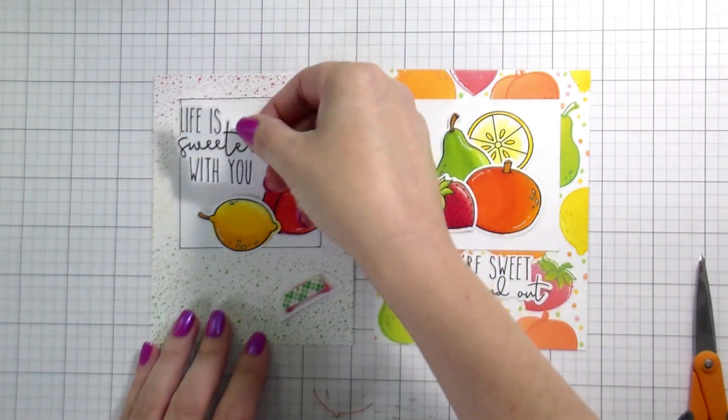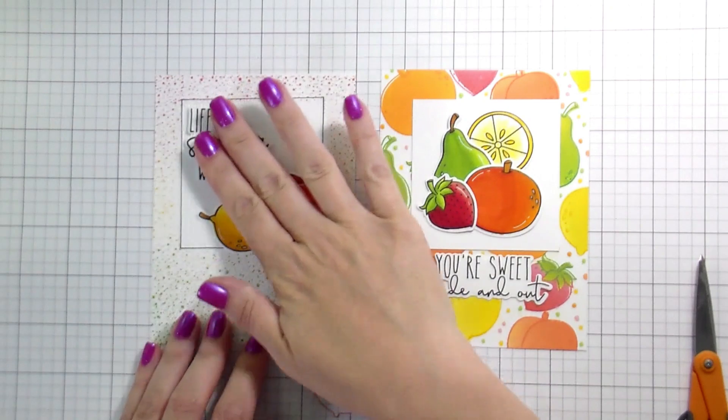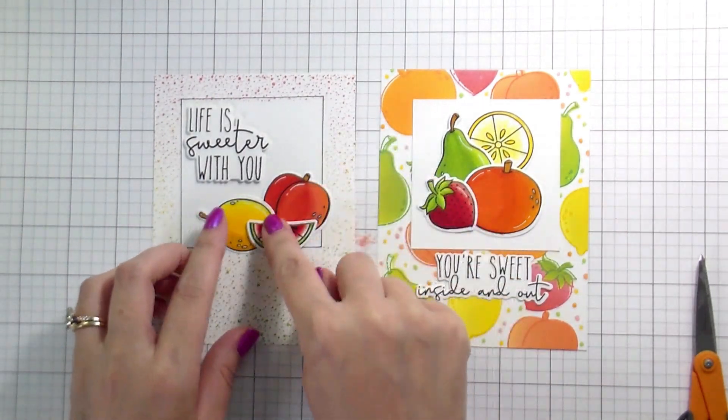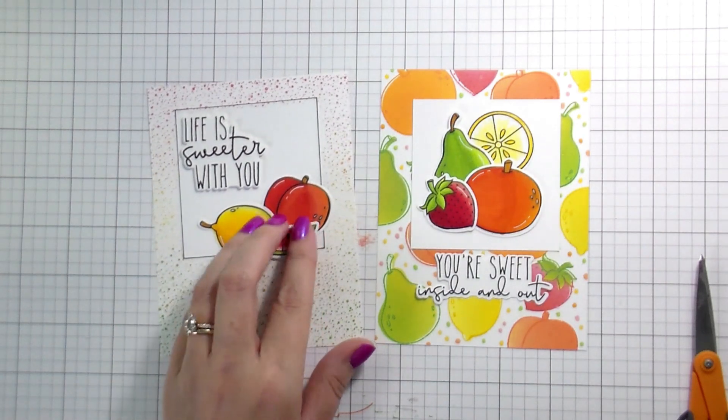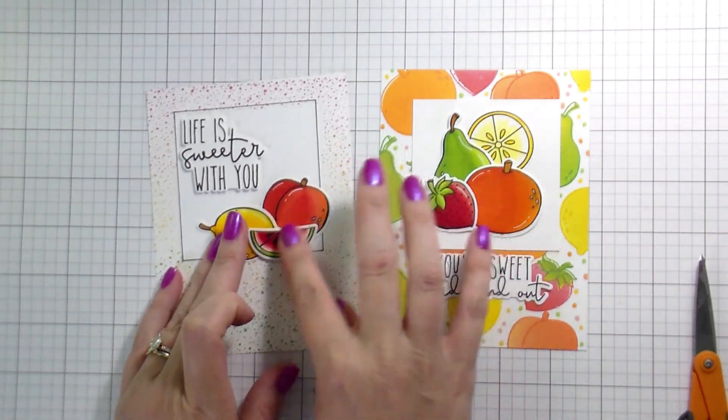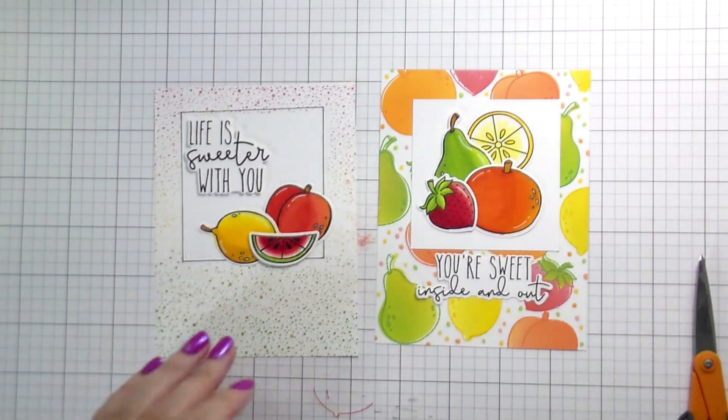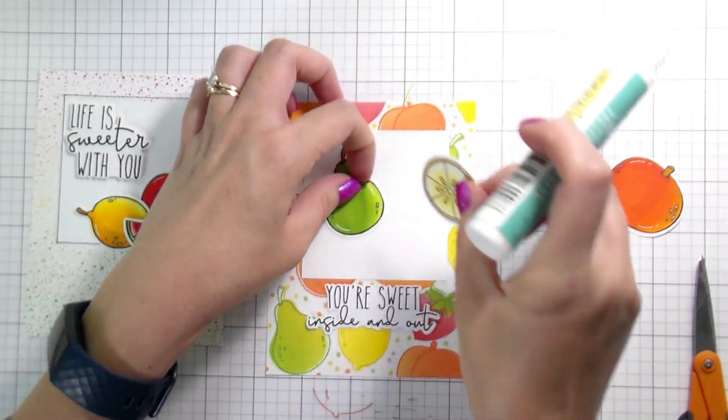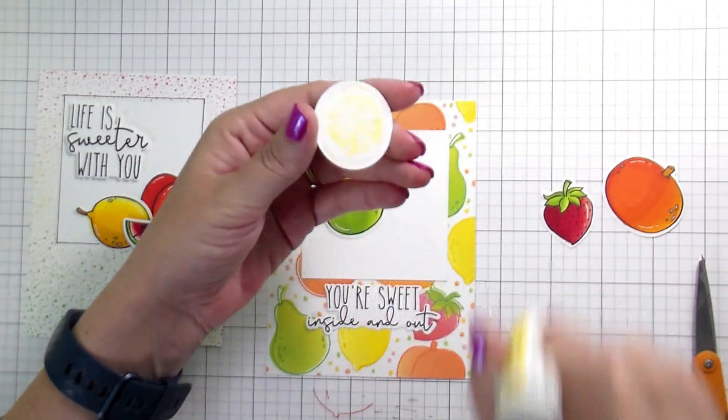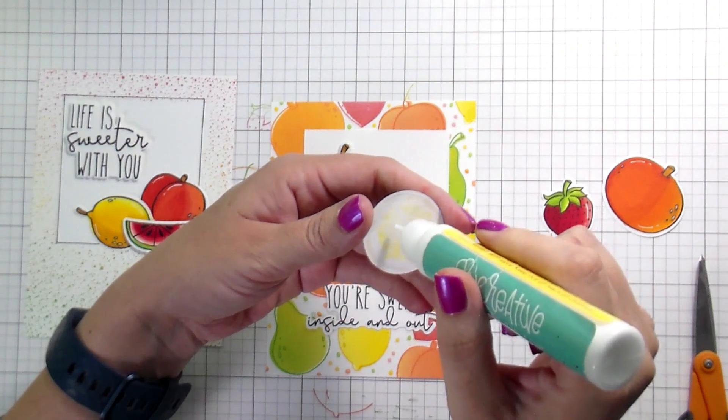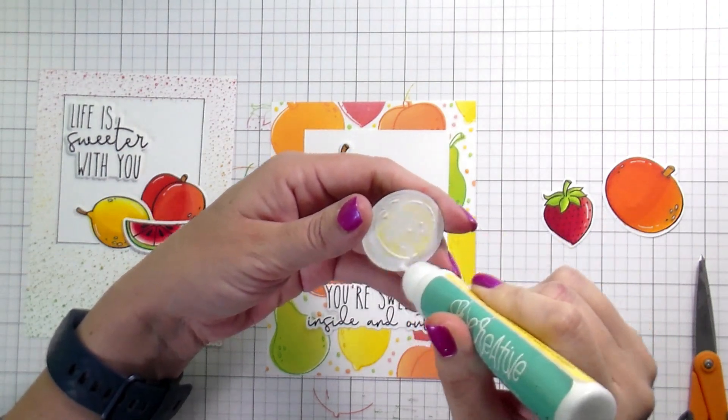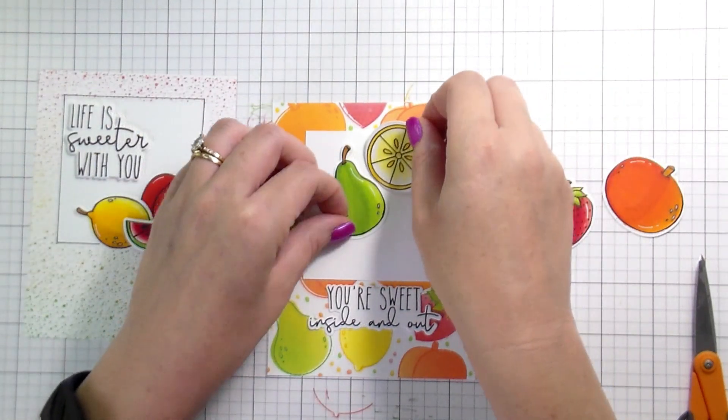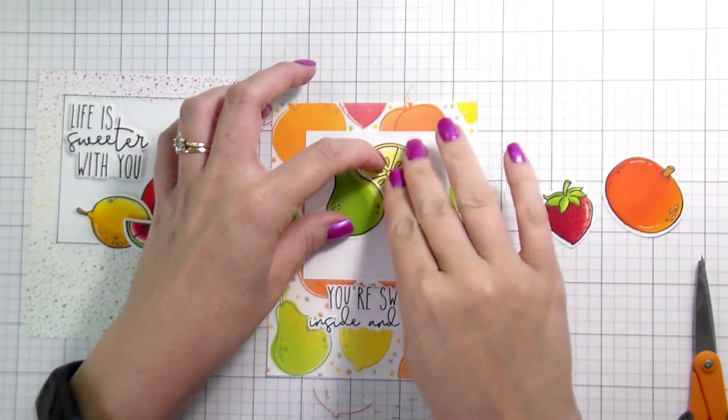For the card, putting them together, I chose to pop up some of the elements and leave the other ones flat. So I popped up the sentiment in both cards, and then the fruit that was the closest - the watermelon, the strawberry, and the orange - those are all popped up on foam. She did not sleep great the night before. Clearly, she's starting to not feel well. I had gotten up with her in the middle of the night, and she didn't go back to bed until like 4 a.m., and her appointment was at 10:30.